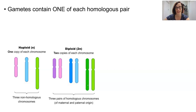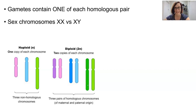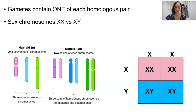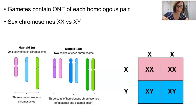Since biological females only have X chromosomes — two of them — we can assume that the ovum is carrying an X as its sex chromosome. But since biological males carry both an X and a Y chromosome, 50% of the sperm will be carrying an X and the other half will be carrying a Y. And when fusion occurs at fertilization, the genes on these sex chromosomes will be inherited by the new offspring.